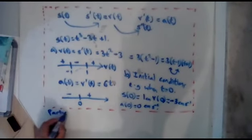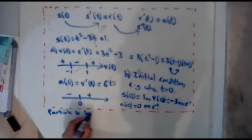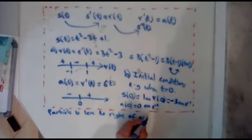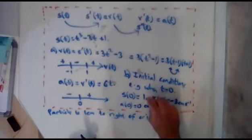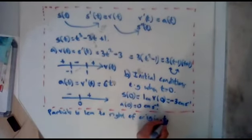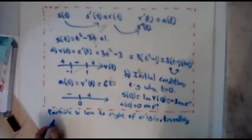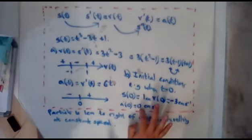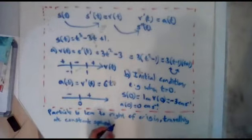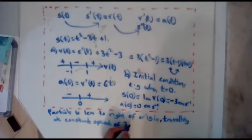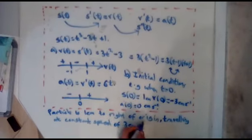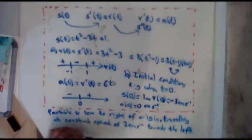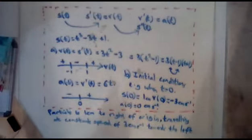So initial conditions. Particle is 1 centimeter to the right of origin. So that's the 1 here. Travelling at constant speed. I know it's a constant speed because the acceleration is 0. It's a constant speed of 3 centimeters per second towards the left. I know it's going left because this way is positive and it's a negative number.